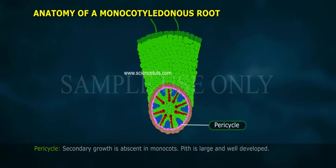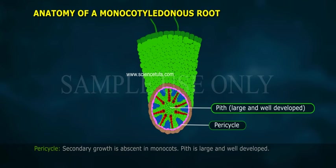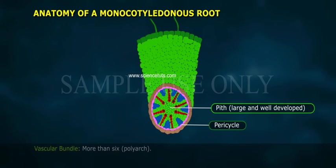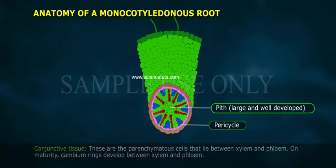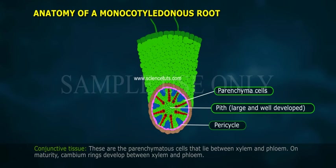Pericycle: Secondary growth is absent in monocots. Pith is large and well-developed. Vascular bundle: more than six polyarch bundles. Conjunctive tissue: these are the parenchymatous cells that lie between the xylem and phloem.